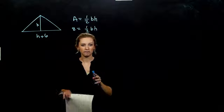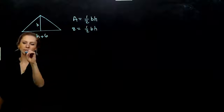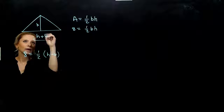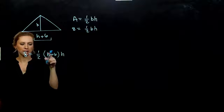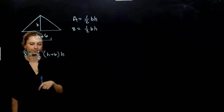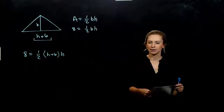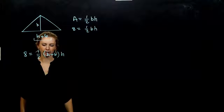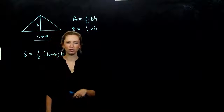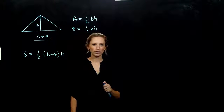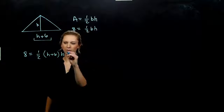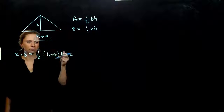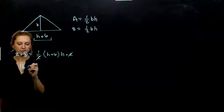We have both base and height in terms of h, so we have an equation in one variable. I don't want to distribute one-half and deal with fractions, so multiply both sides by 2 to get rid of it. Multiplying by the reciprocal eliminates it on the right and moves it to the left-hand side. The order of multiplication doesn't matter; generally we like the smaller term first.